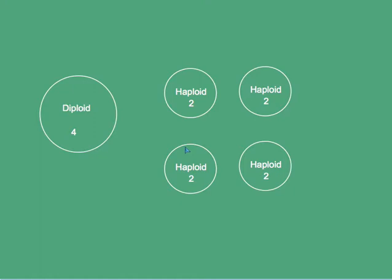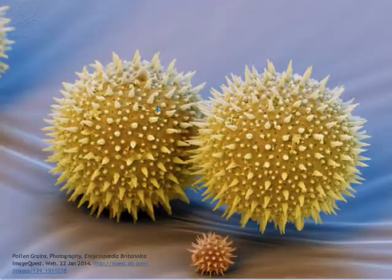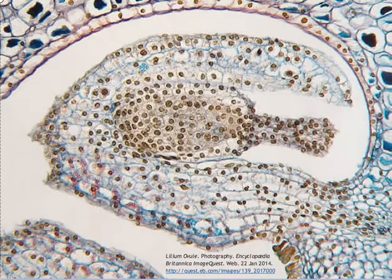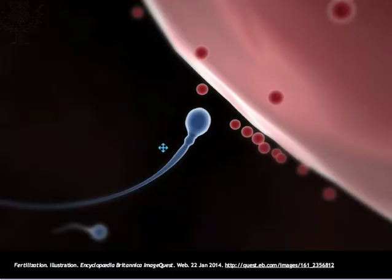Examples of gametes include sperm cells, egg cells, pollen, and ovules. Upon fertilization, haploid gametes unite to restore the diploid number.